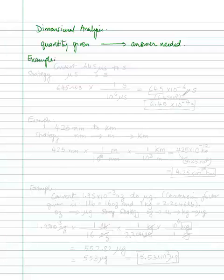For example, you are asked to convert 6.45 microseconds to seconds. So your strategy then is to convert microseconds to seconds. That's the strategy.